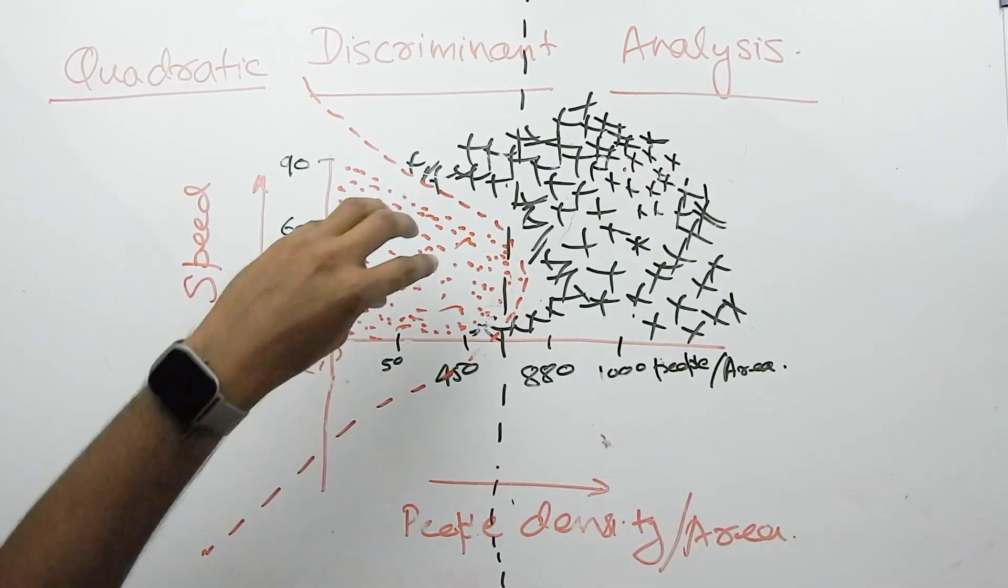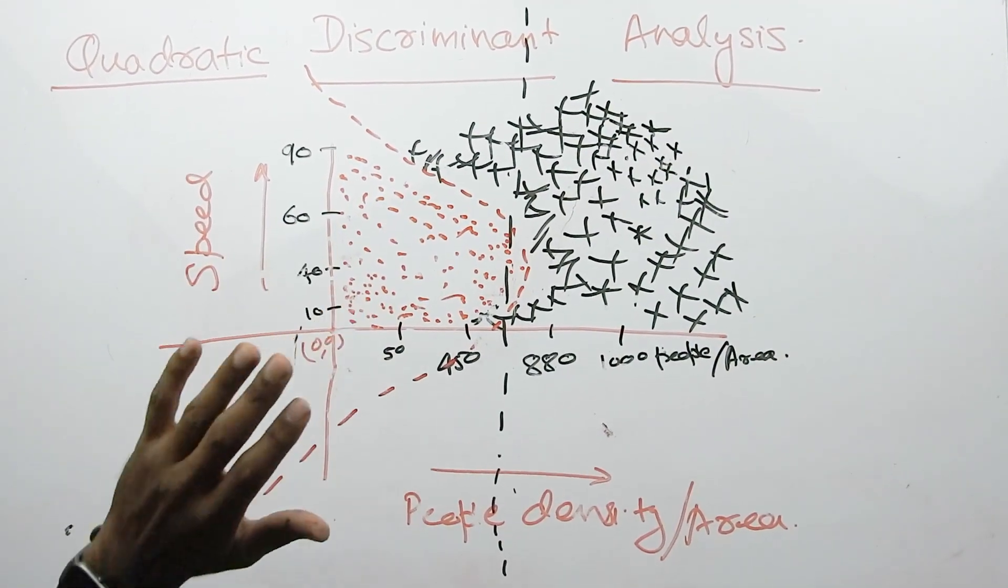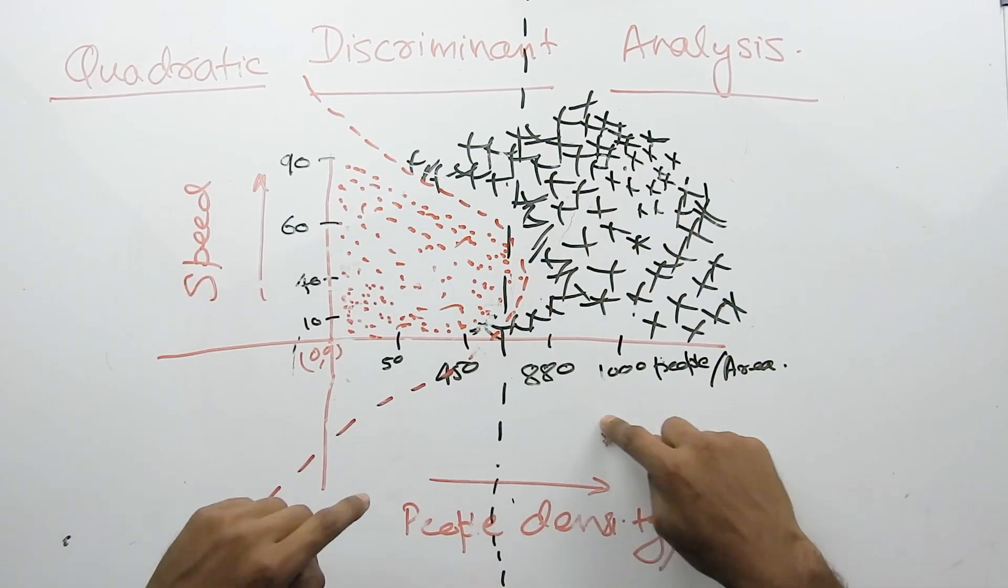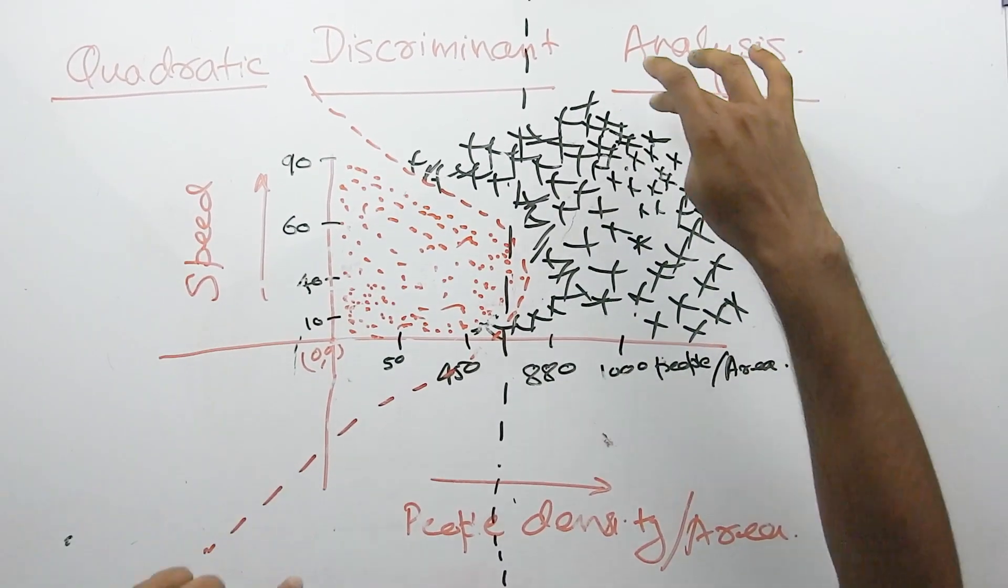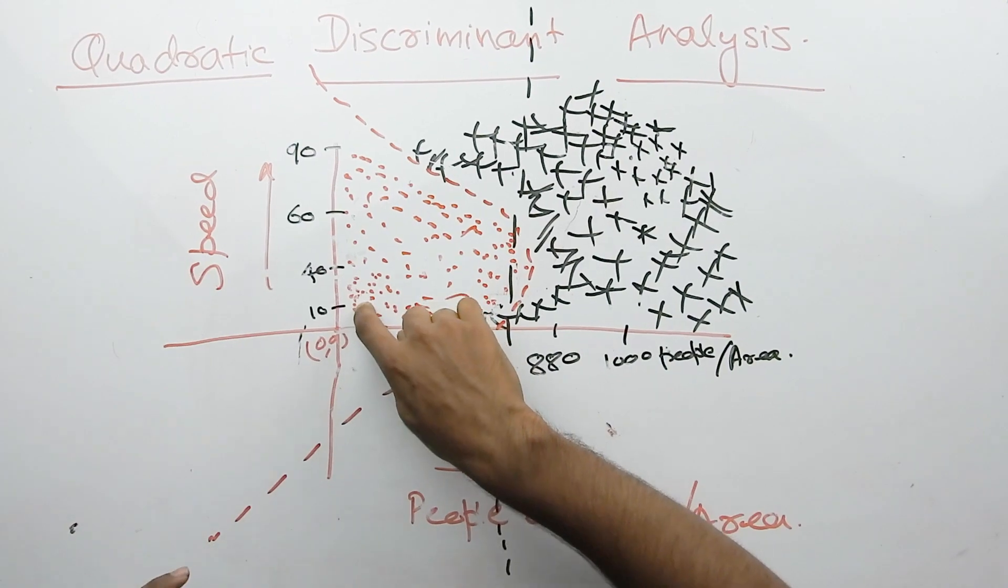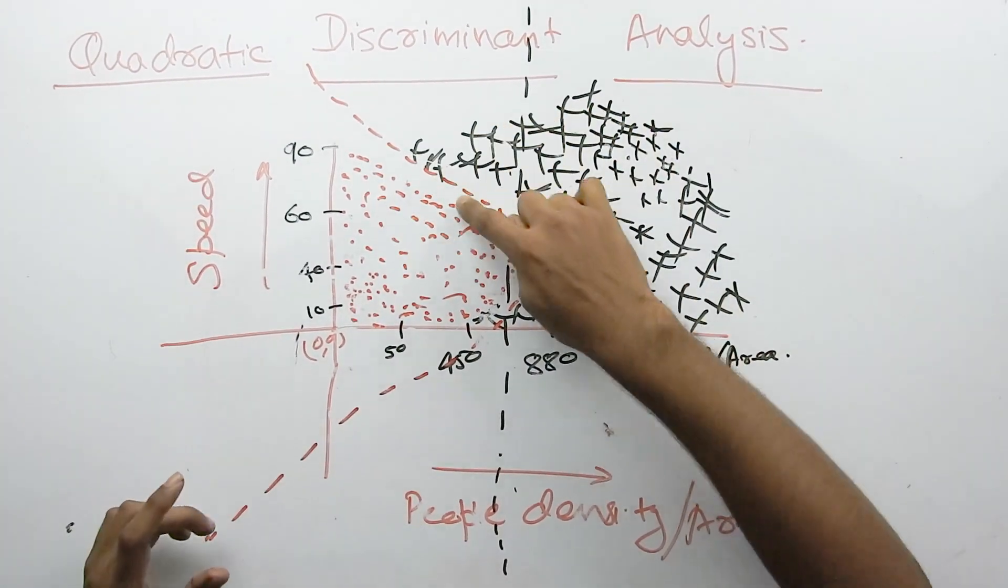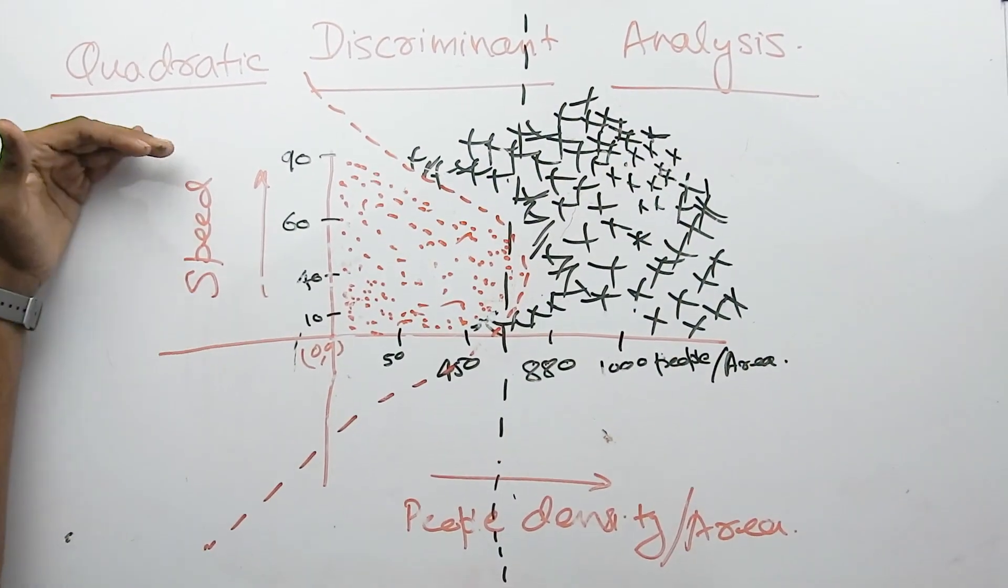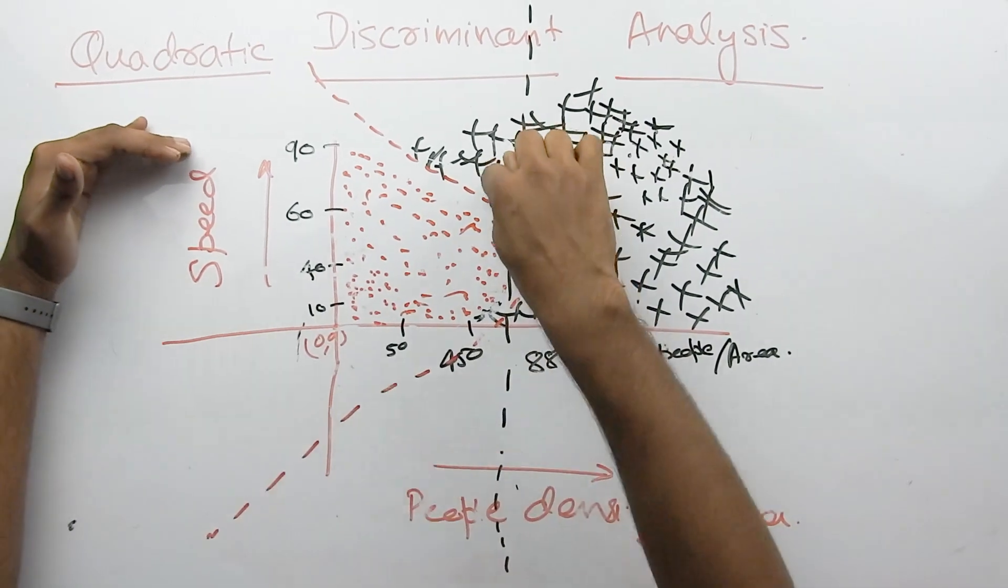Black means deaths, red means lesser deaths. So, you can see that when the density is more and when the density is less, and when the speed is less, then deaths are less. But in this scenario, when the speed of the area is less and the density is less, then deaths will be more.